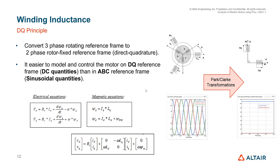For most electric machines, it's easier to work in the DQ reference frame. Typically we deal with three-phase quantities that simultaneously change with time, which is complex. Instead, we project all quantities — voltage, flux linkage, current, inductance — into a rotor-fixed reference frame rotating at synchronous speed. In this new reference frame, the quantities become mostly DC (constant), making them much easier to use for modeling and control purposes.